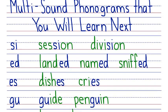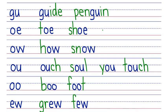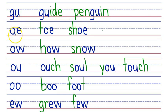Let's scroll down to see more phonograms. You will learn about the GU phonogram that makes two sounds: G and G. GU says G as in 'guide,' and GU says G as in 'penguin.' You will learn about the OE phonogram that makes two sounds: O and OO. OE says O as in 'toe,' and OE says OO as in 'shoe.'